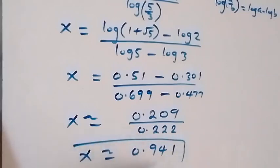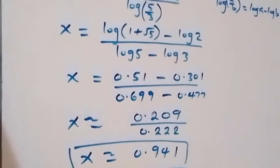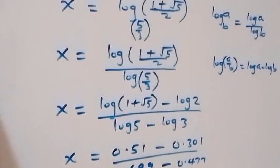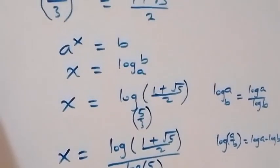So here we have the approximate solution x approximately equals 0.941. Thank you for watching. Don't forget these steps. Subscribe for more videos and turn on the notification bell. Share this video, give it a thumbs up, and put your comments. Thank you, see you in the next classroom.